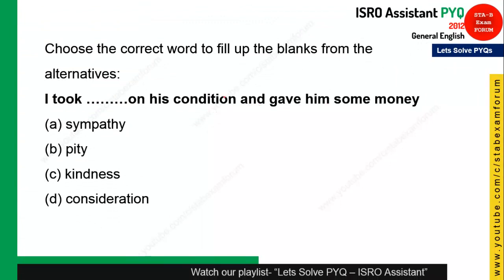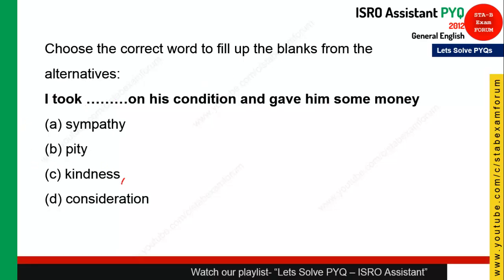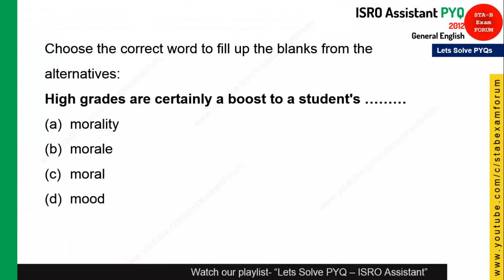The statement is: 'I took ___ on his condition and gave him some money.' When you give money because someone is in a poor condition, you are not showing kindness but pity. Out of the four options, 'pity' is the most appropriate. The correct sentence is 'I took pity on his condition and gave him some money'. Option with 'pity' is correct.